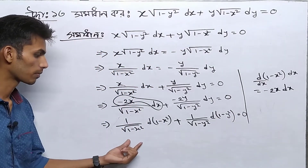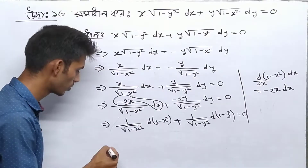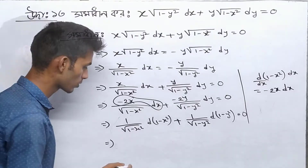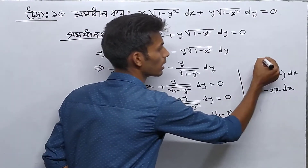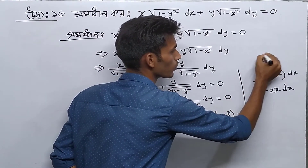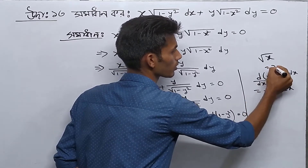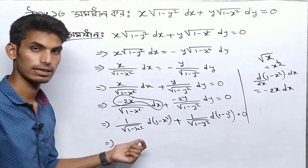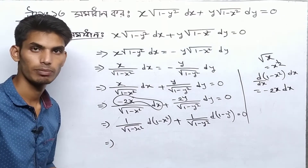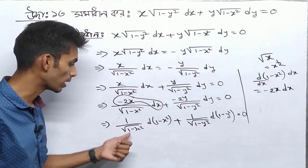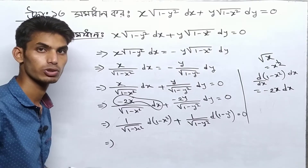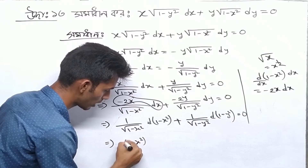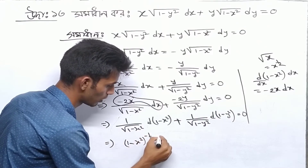Now we write (1-x²). Before that, we write root x, and then 1 minus x squared. So 1 over root(1-x²) is (1-x²) to the power of inverse, that is minus one half.